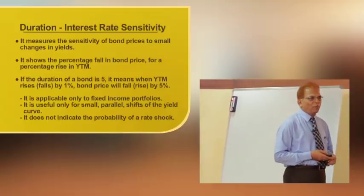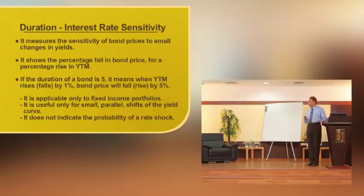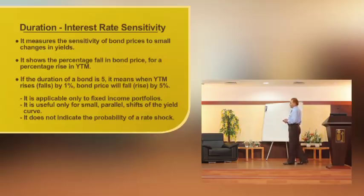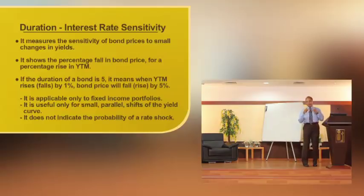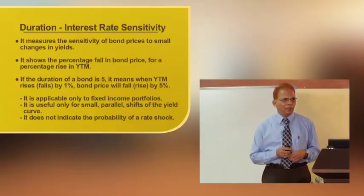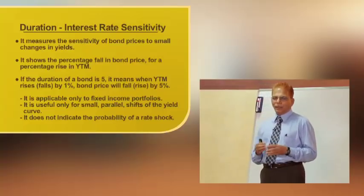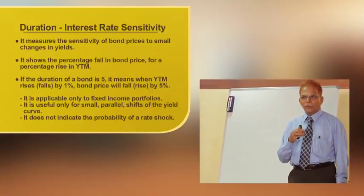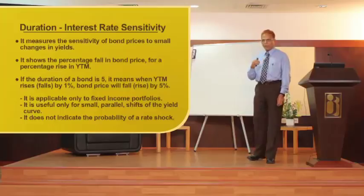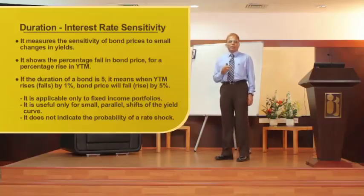If the duration of a bond is 5, it means that when the YTM rises or falls by 1%, the bond price will fall or rise by 5%. Duration is applicable only to fixed income portfolios and is used for very small and parallel shifts in the yield curve. It does not take into account the probability of that change happening — it only uses the price sensitivity to a known quantity of interest rate movement.